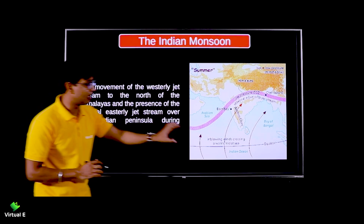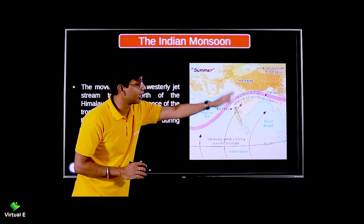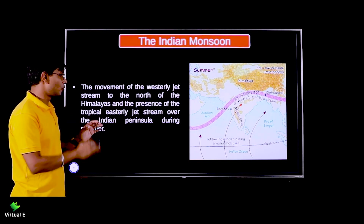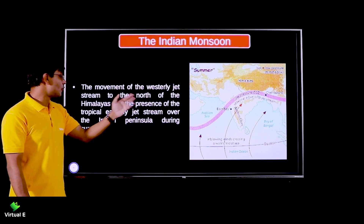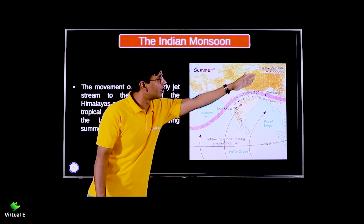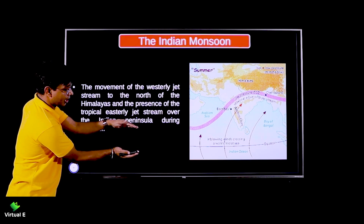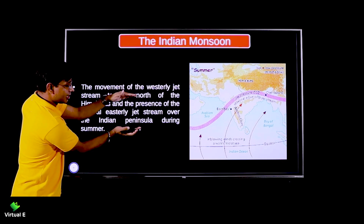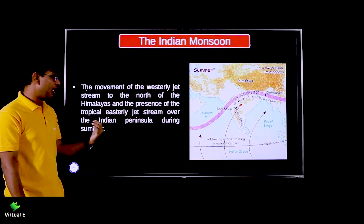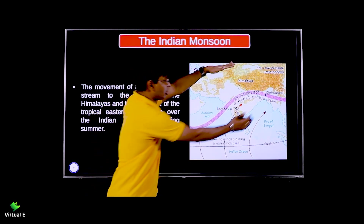The ITCZ shifts so far up due to the apparent movement of the sun, causing wind movements - going up and coming down. Additionally, the westerly jet streams, which normally come over the Himalayas, shift to the north of the Himalayas. And during summer, the tropical easterly jet streams are present over the Indian peninsula in the south. This creates a good passage of fast-moving winds forming a trough.